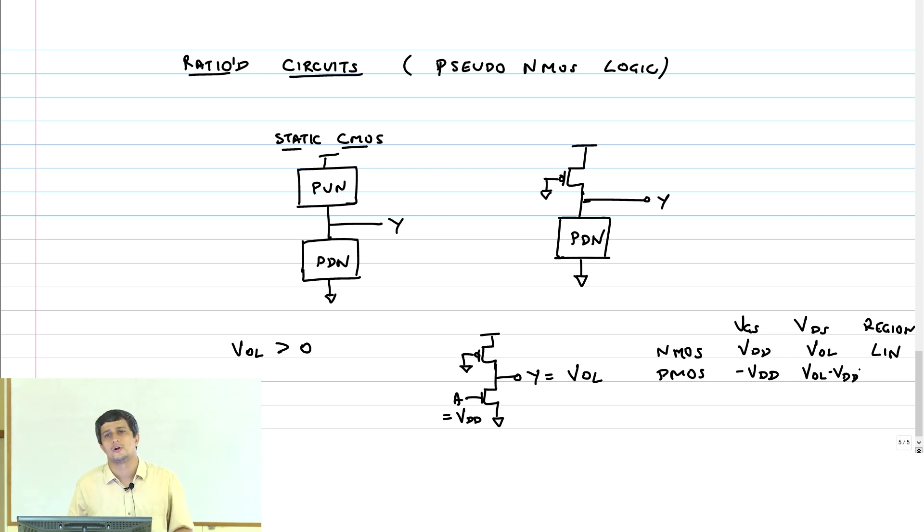What about the PMOS transistor? VGS is minus VDD, VDS is VOL minus VDD. Which region is the PMOS transistor in? You have to do VGS minus VT, that is a reasonably large number, about 0.3 volt if VDD is 1 volt. That will be about 0.7 volt. VOL minus VDD will be very close to minus VDD, therefore this has to be saturation or velocity saturation depending on whether it is short channel or long channel device. Let us say it is in velocity saturation.